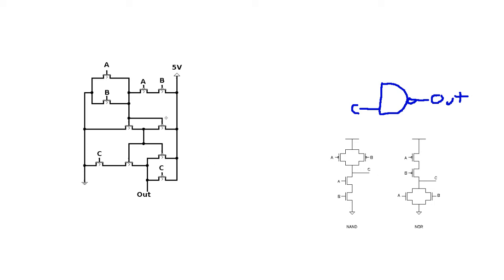Looking for a NOR gate, we need two series PMOS transistors — and right at the top we have exactly that. Then we look for two parallel NMOS transistors, and sure enough we have those as well. So this is a NOR gate. Its inputs are A and B, and its output feeds into the remaining transistors downstream.